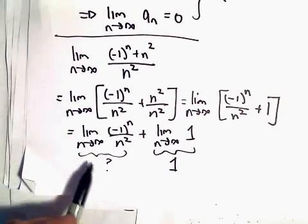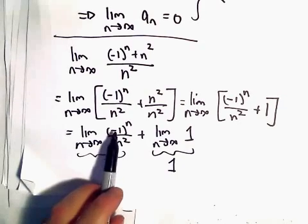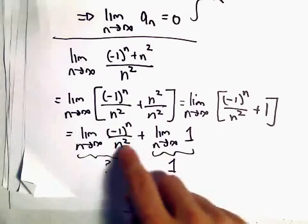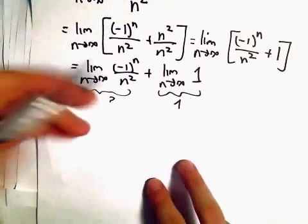I think it's pretty easy to argue. The top is always going to bounce back and forth between negative 1 and positive 1. The denominator is going to get arbitrarily large. So this first limit should certainly go to 0. But to bring in this absolute value theorem,